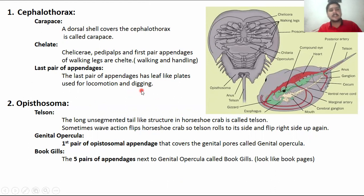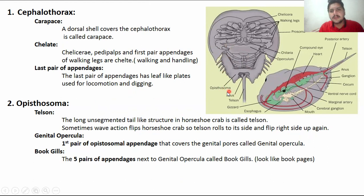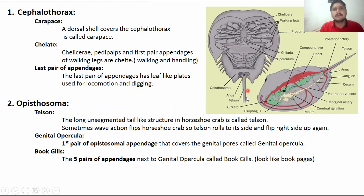The opistosoma is the abdominal region of the horseshoe crab. Within the opistosoma region there is the telson — a long tail-like section that arises posteriorly at the end of the body, showing a spike-like section.